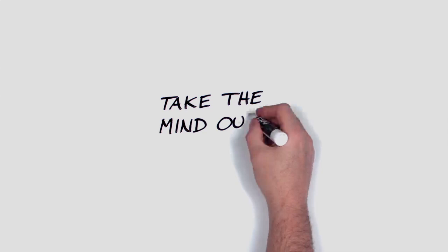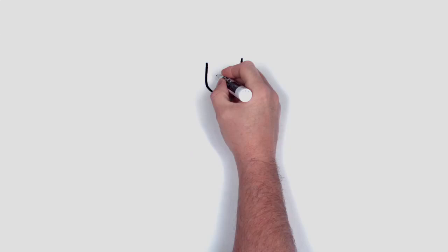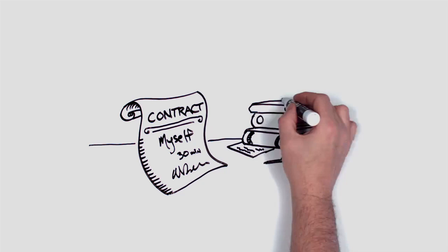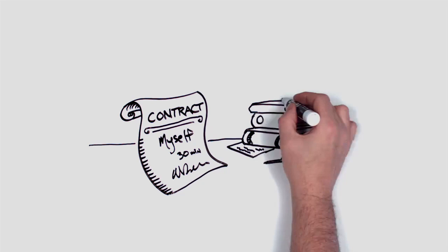And fourth, take the mind out of the middle. Self-control hurts because we battle against ourselves. Should I exercise now or later? Should I eat one or two slices of cake? If you want to study more, set up a contract with yourself. Whenever I get home from class, I'll do 30 minutes of studying. Sounds almost too easy, doesn't it?